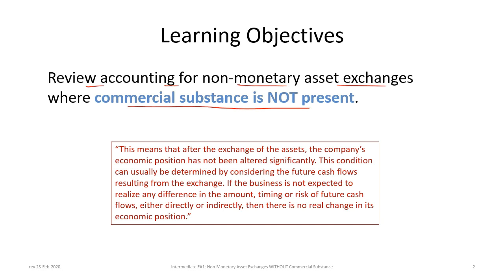Recall from the text that commercial substance means that the company's economic position would have been significantly altered after the exchange. In a situation where commercial substance is not present, the company's economic position has not been altered significantly. One way to test that is by looking at the future cash flows resulting from the exchange. If a business isn't expected to realize any difference in the amount, timing, or risk of future cash flows, then there is no change in economic position. This is like exchanging a red truck for a blue truck where the trucks are essentially the same.